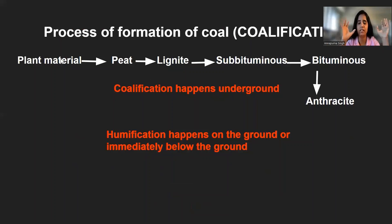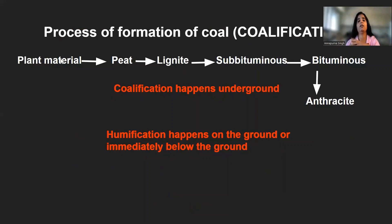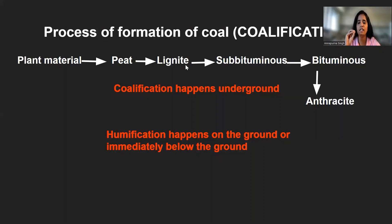Millions of years ago, plant material fell into the ground and the supply of oxygen was cut off, and it became peat. Peat is soft and has a very high moisture content. Then comes lignite, the lowest quality coal, which is also not very hard and has a really high moisture content. After lignite, the coal becomes harder, loses some of its moisture, and becomes sub-bituminous.